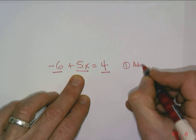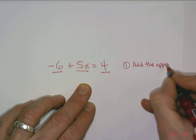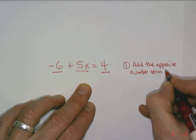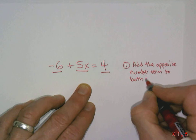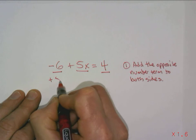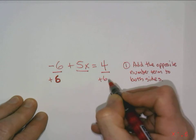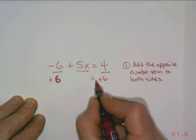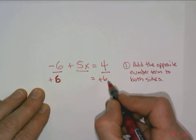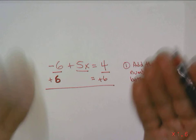First step is always to add the opposite number term to both sides of the equation. So we're going to add the opposite of negative 6 which is positive 6 to both sides. And I like to keep the equal sign between to remind us that the whole idea here is we're trying to keep this thing balanced. We can't do something to one side that we don't do to the other, otherwise it's no longer equal. We can add 6 to both sides because that keeps this in balance.